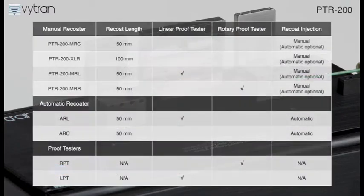Vytran offers eight PTR-200 models to give customers a selection of the recoat and proof test capabilities best suited to their applications. Choices include manual or automatic recoaters with or without proof test capabilities, a linear proof tester, or a rotary proof tester.